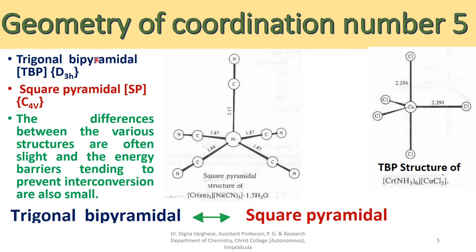Every intermediate structure between perfectly TBP and perfectly SP is also possible, and most cases show some distortion. A square pyramidal complex would have C4v symmetry if all ligands are identical; otherwise its symmetry will be lower than D3h or C4v.